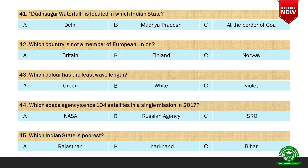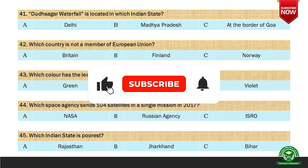Next question: Dudhsagar waterfall is located in which Indian state? Options are A. Delhi, B. Madhya Pradesh, and C. at the border of Goa. And the right option is C. at the border of Goa.